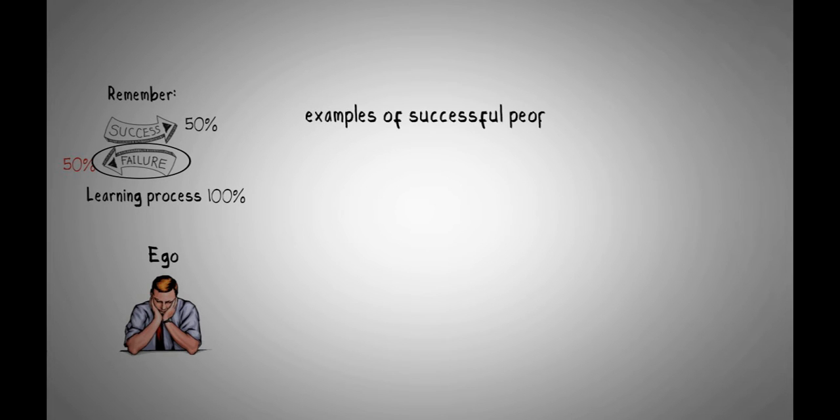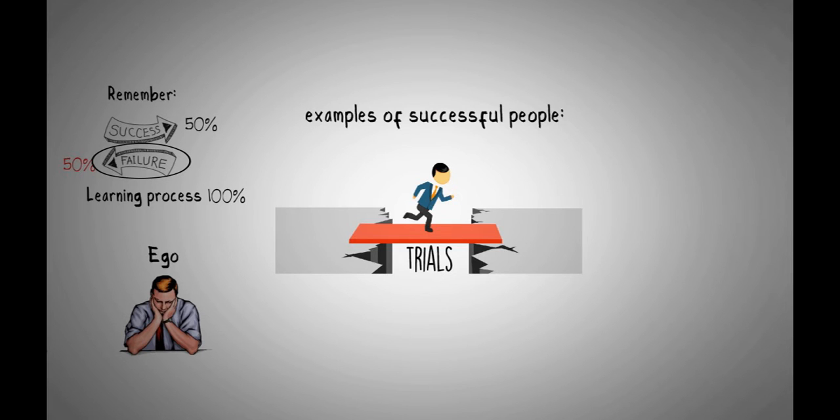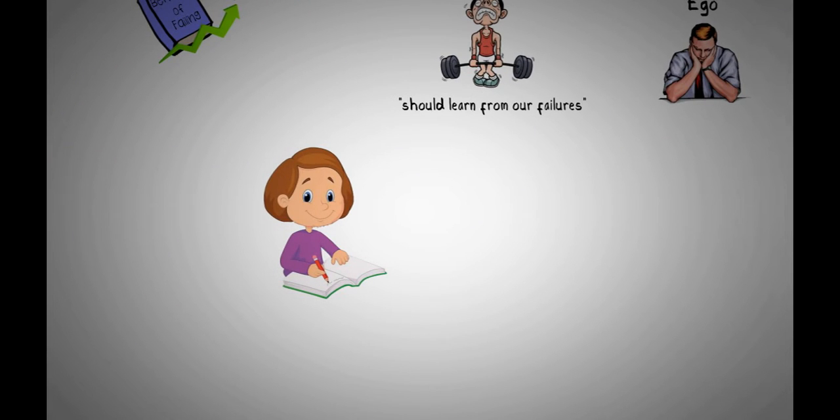Let's take a look at some examples of successful people learning from their failures. It's easy to overlook the trials and tribulations that one has overcome before attaining their success, which is why no one really understood how hard J.K. Rowling had to work before she became a billionaire.